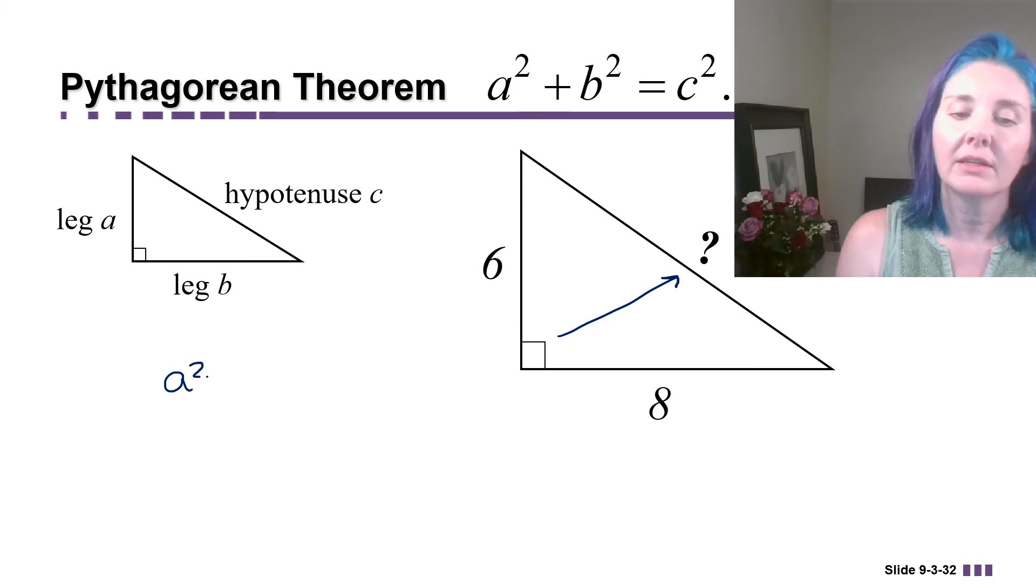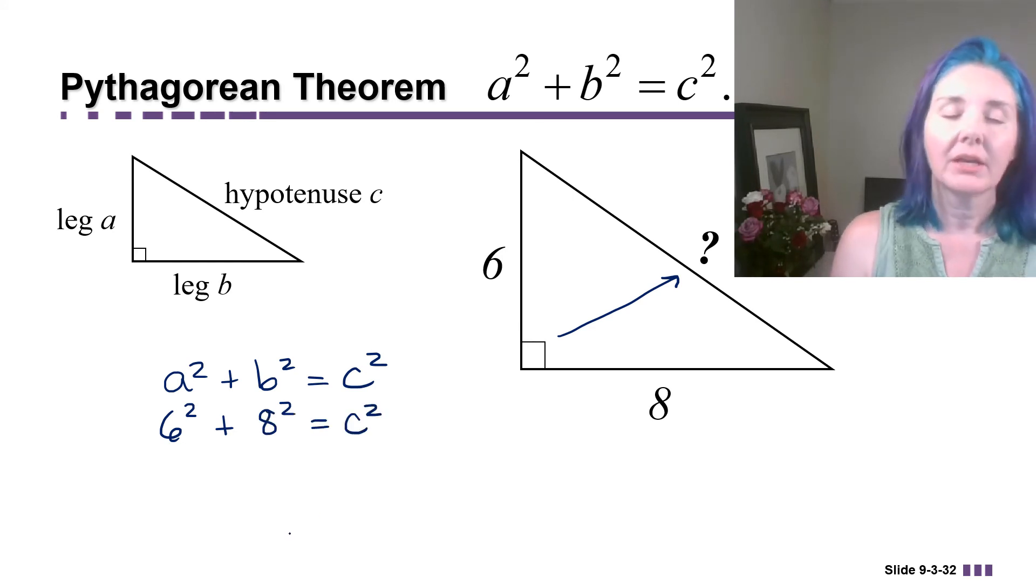So when I fill in a squared plus b squared equals c squared, it's the letter c that's unknown. So we have 6 squared plus 8 squared equals c squared. By the way, it doesn't matter if you put 8 squared plus 6 squared or 6 squared plus 8 squared. The legs are interchangeable. The one that has to be unique is the hypotenuse c.